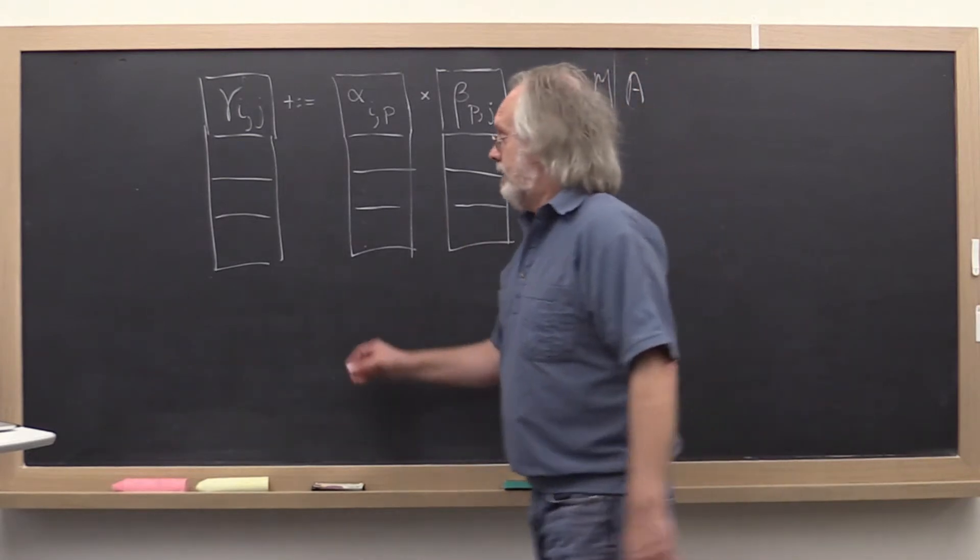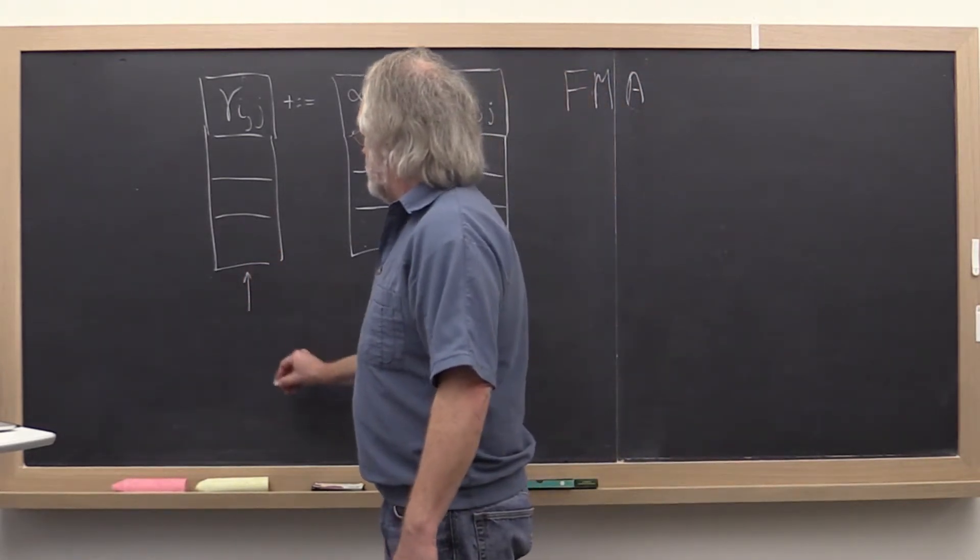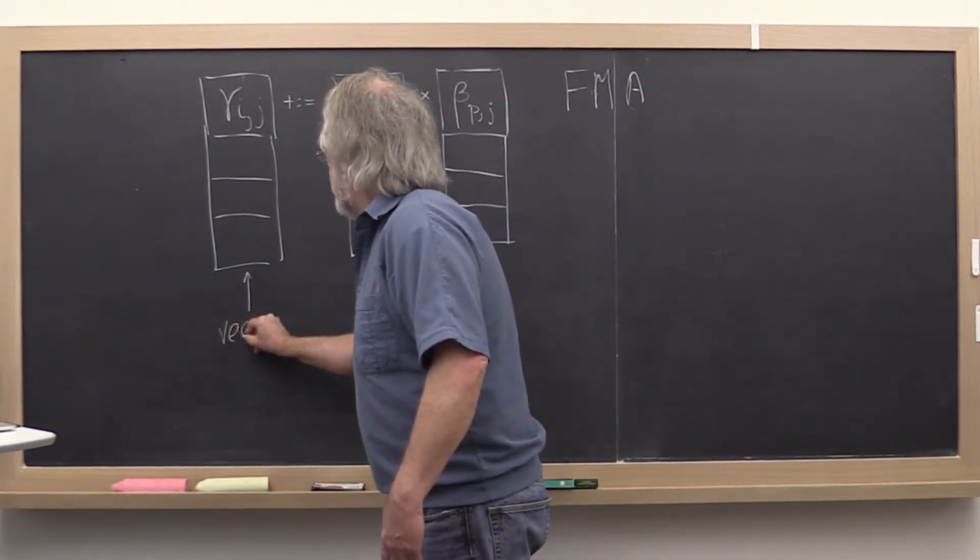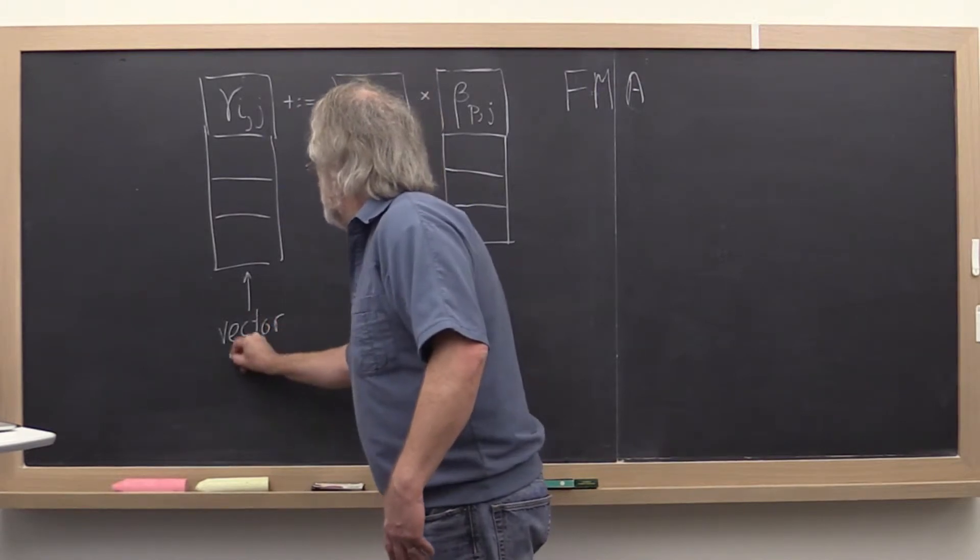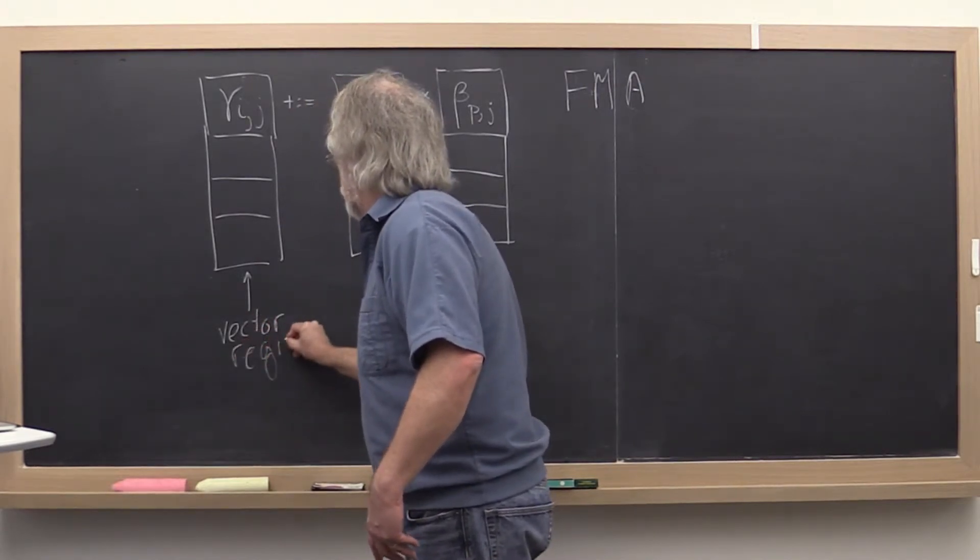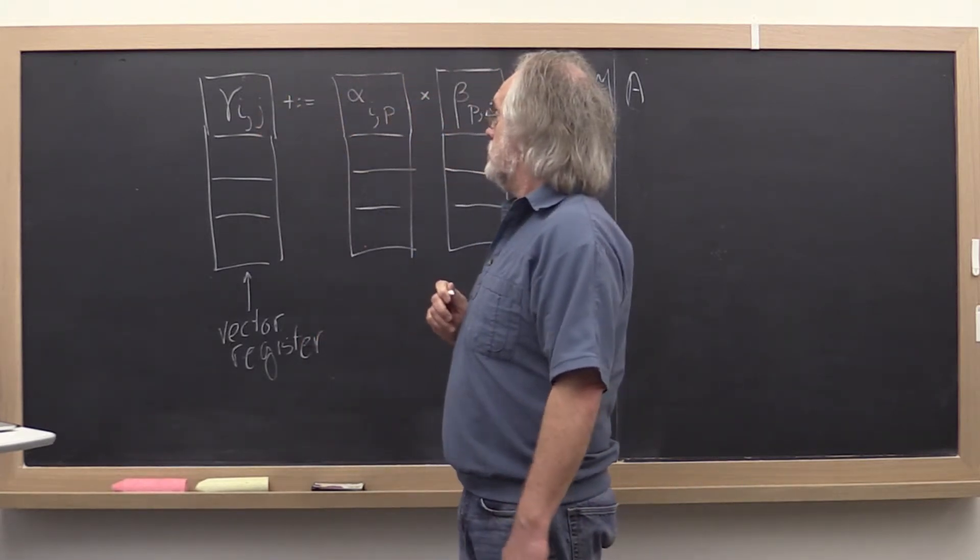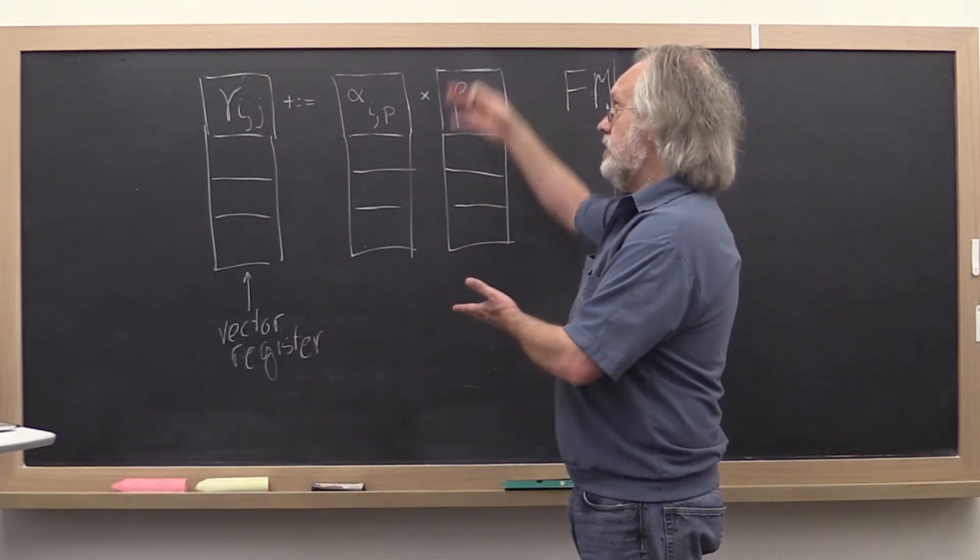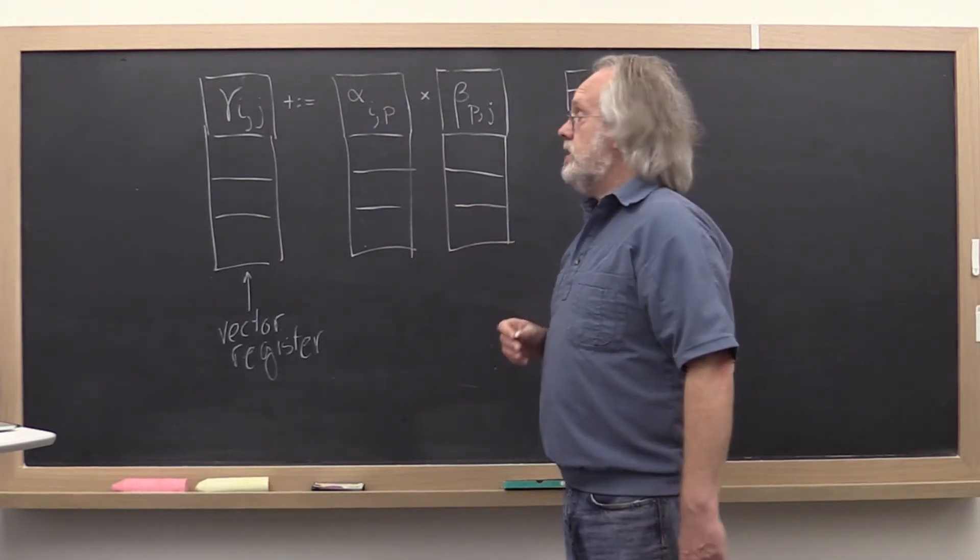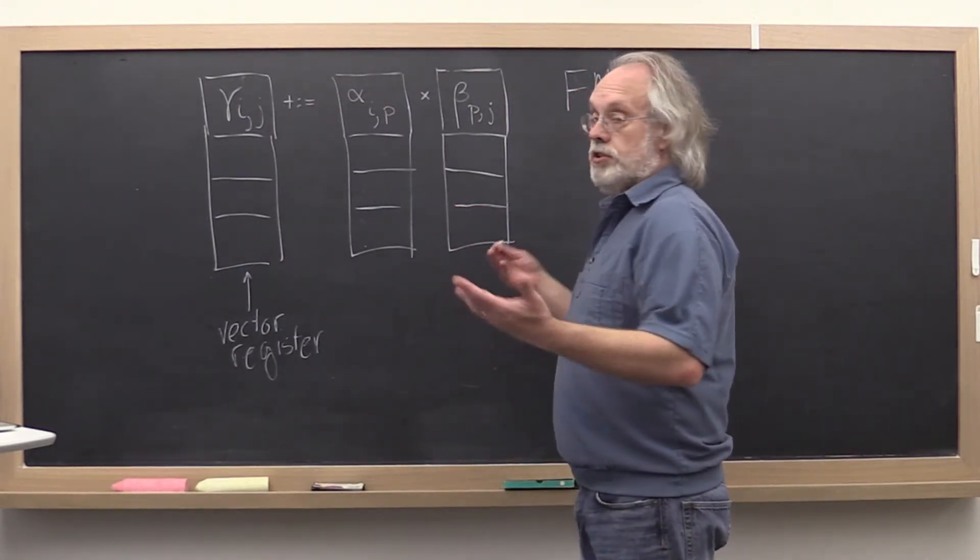So conceptually, this now becomes, instead of a register, something we call a vector register, because it holds a small vector - in this particular case, four doubles. And then the instruction that simultaneously updates those is known as a vector instruction.